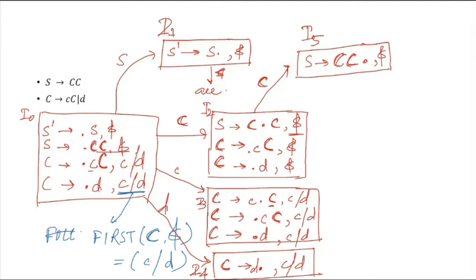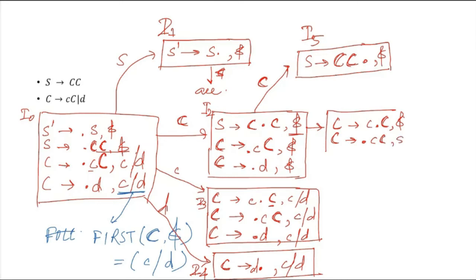From I2, after the dot small c is there. Doing the transition on small c gives us capital C to small c dot capital C, with lookahead dollar. After the dot capital C appears, so we add capital C to dot small c capital C comma dollar, and capital C to dot d comma dollar. I name this I6.